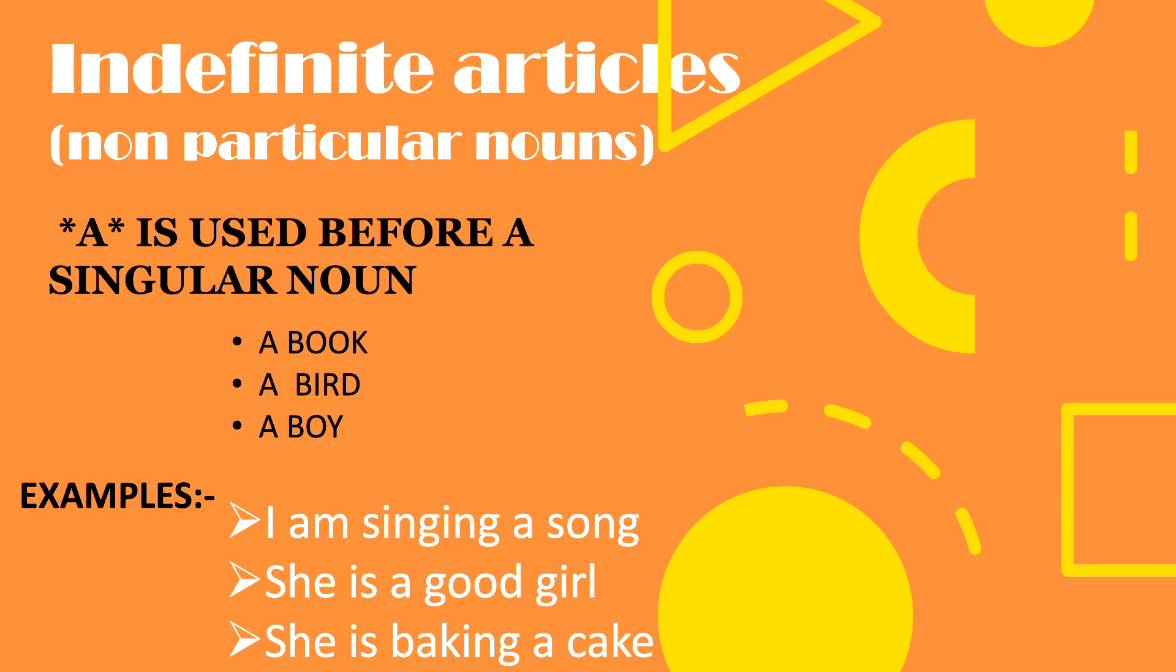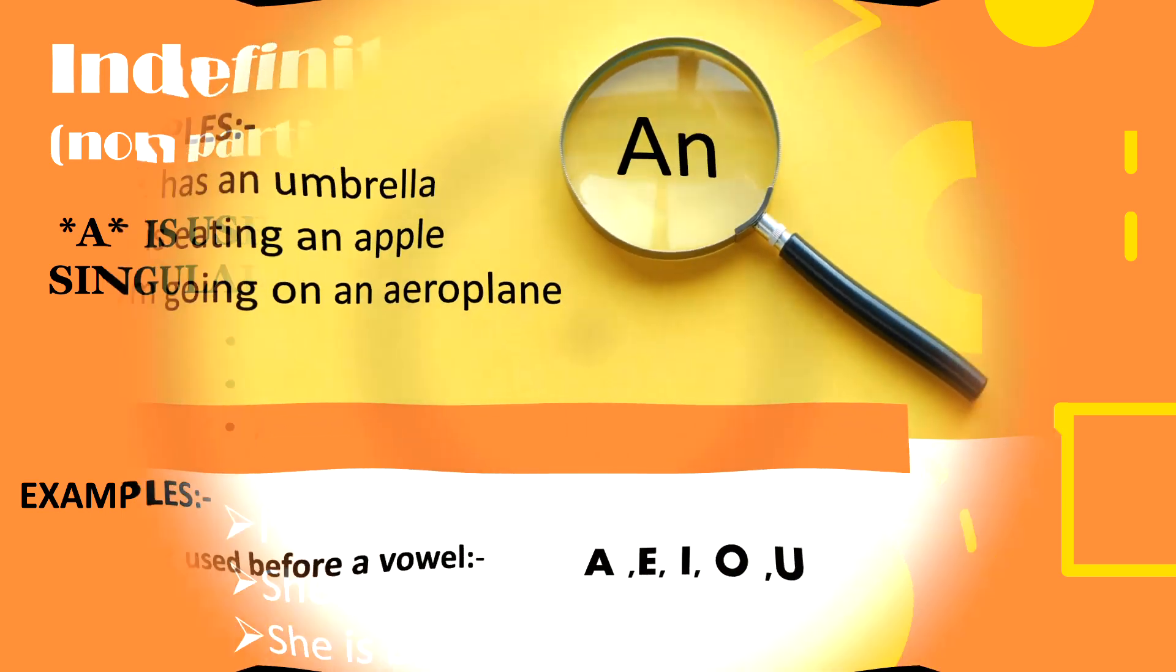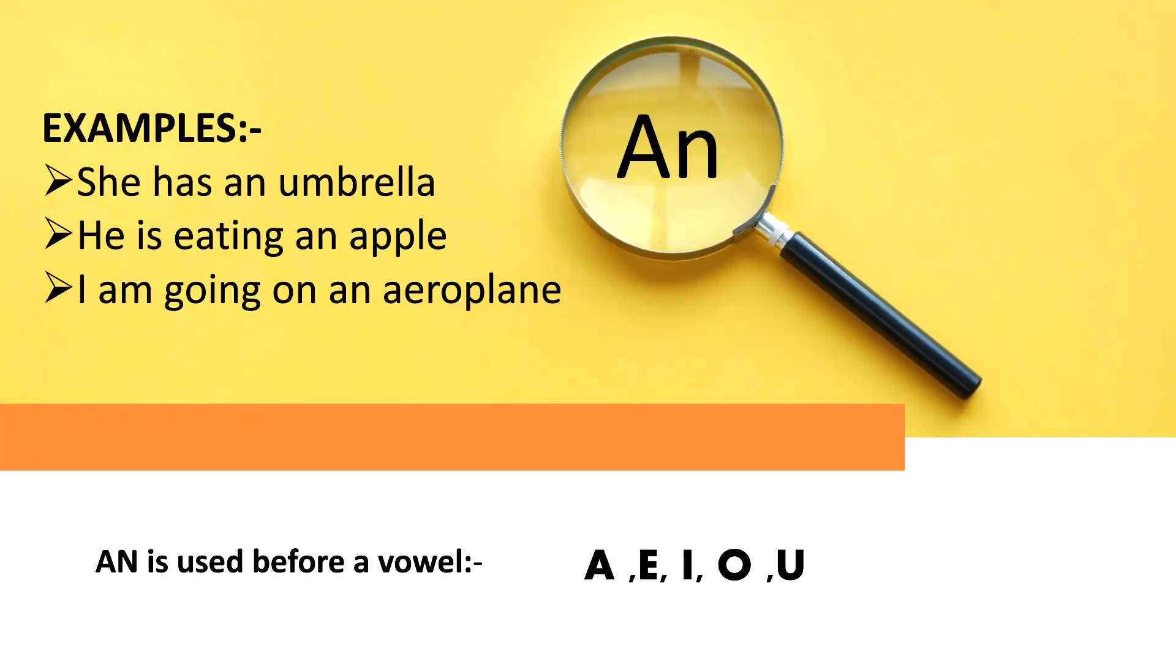These are all examples of the indefinite article 'a'. Coming to the other indefinite article, which is 'an'. This 'an', if you see, is used before a vowel. The vowels are a, e, i, o, u.